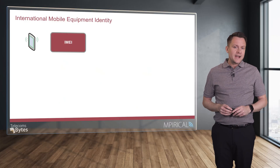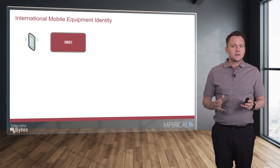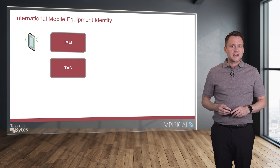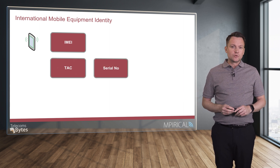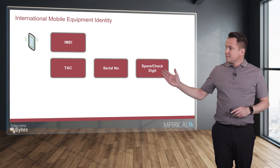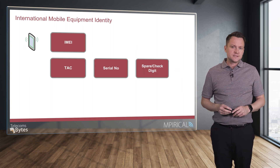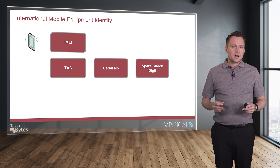The IMEI number consists of three parts: the TAC or type allocation code, the serial number, and finally the spare or check digit. We'll go through each one of these in turn, starting with the TAC.